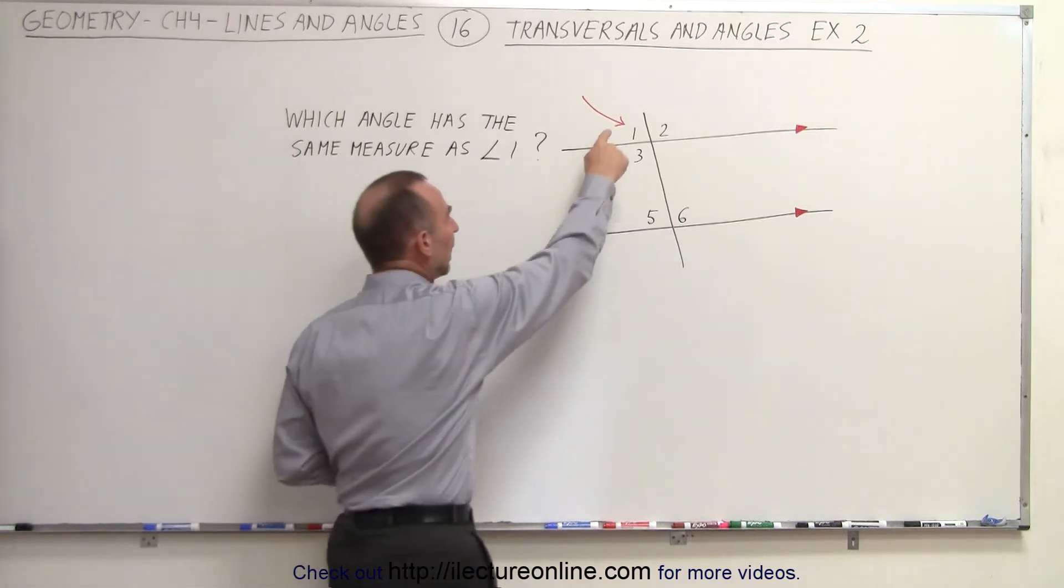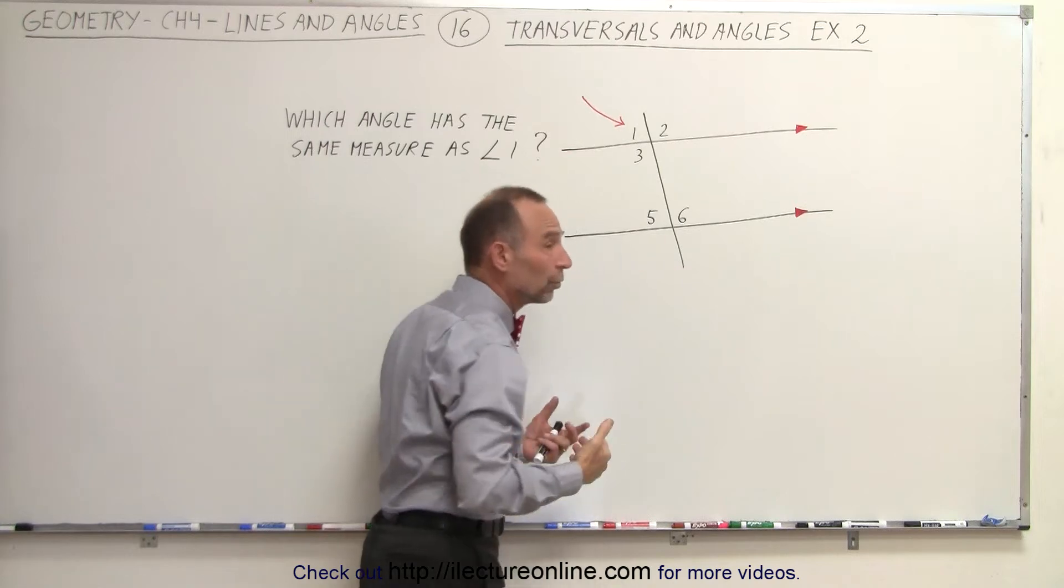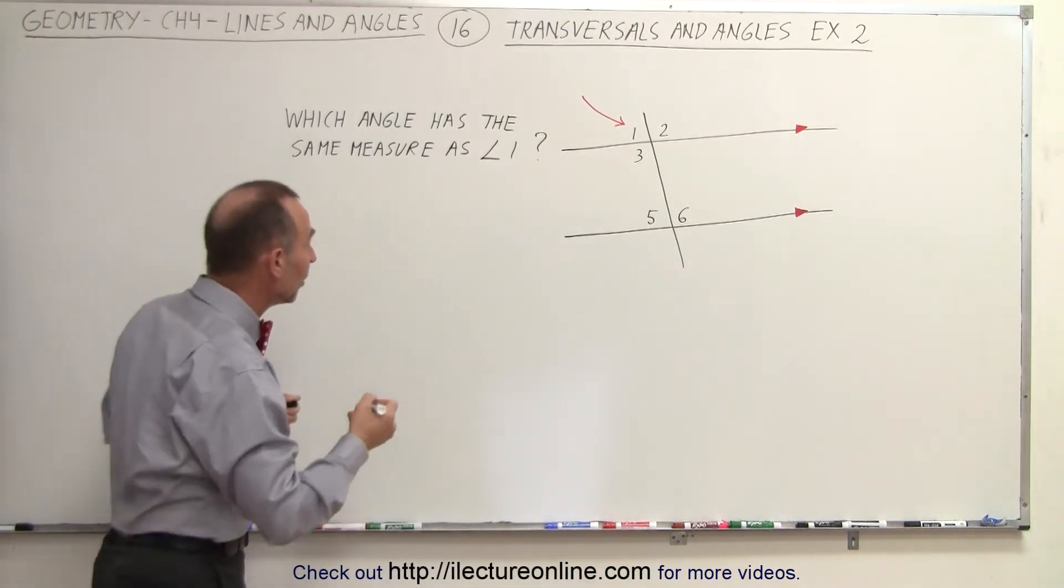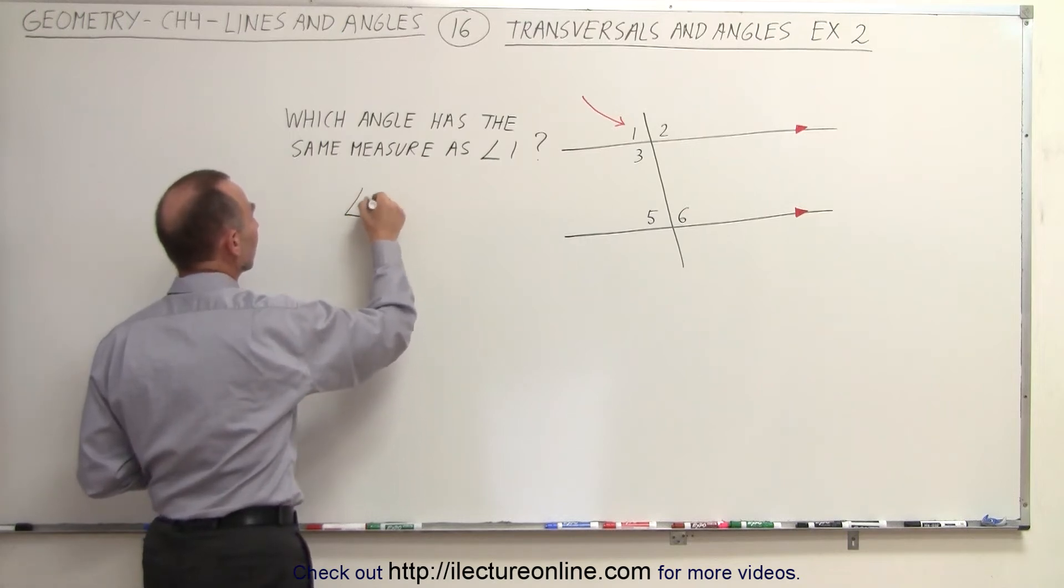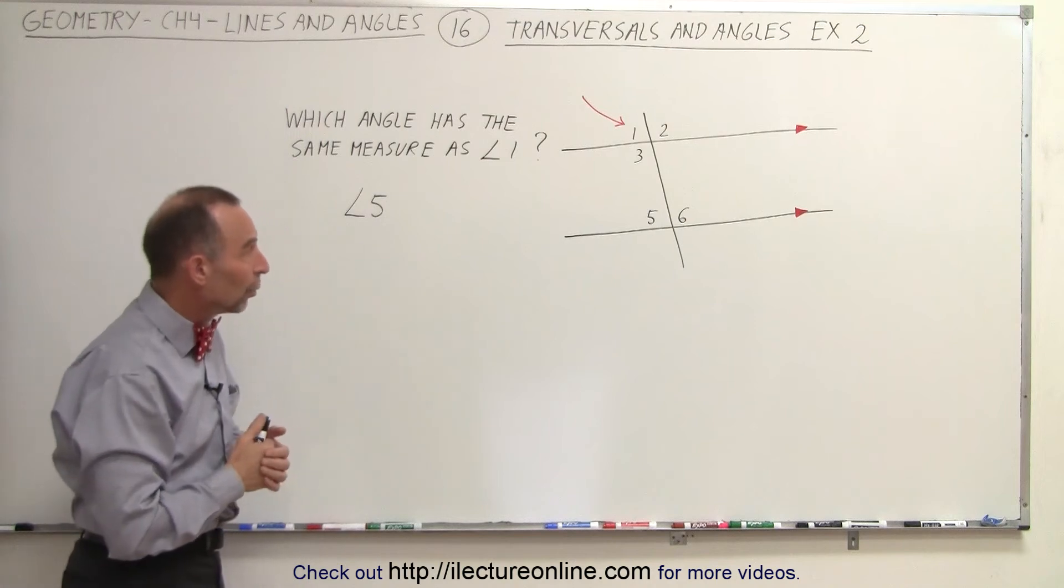How about angle 1 and angle 5? Notice that these are corresponding angles, and the rule says that if they're corresponding angles, their measures must be the same. So therefore angle 5 has the same measure as angle 1.